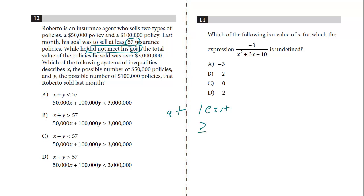And so even though he was trying to sell greater than or equal, at least, he didn't meet it, and so it's going to be less than. He didn't meet the goal. So the number of policies, we've got X and Y, X plus Y is less than 57. That's our first inequality, so A works.